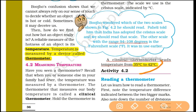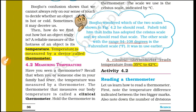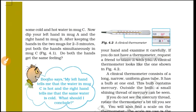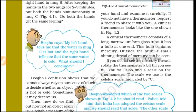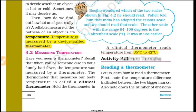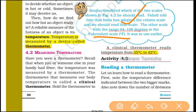The clinical thermometer measures temperature in the range of 35 degrees to 42 degrees Celsius. This is an important question — heat and temperature are very important topics. The temperature range on a clinical thermometer goes up to 42 degrees Celsius.